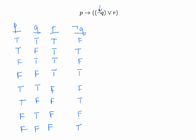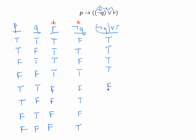Now the next level of parentheses out is to create the OR statement: not Q or R. We'll make a column for (not Q) OR R. This is an inclusive OR — a regular disjunction — so we look at the not Q column and the R column. If either or both of those values are true, we put true; if both are false, we put false. So: true, true, true, true — in this row both R and not Q are false so we put false — then true, false, false, false, true, true.